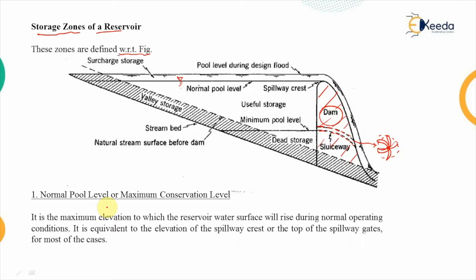The water level in this reservoir is classified according to the different amounts of water present in it. The first zone is known as the normal pool level or the maximum conservation level. This is the maximum elevation to which the reservoir water surface will rise during normal operating conditions — up to the crest of the dam or the spillway.